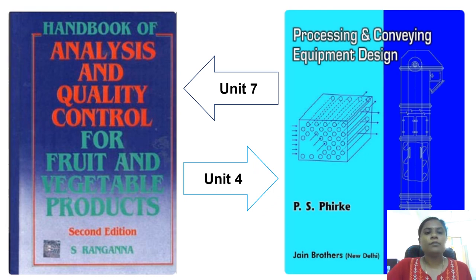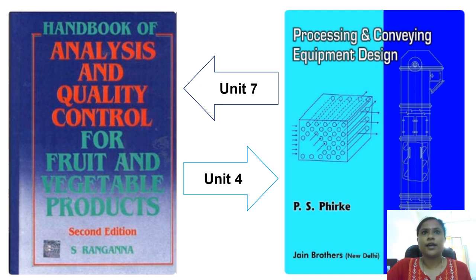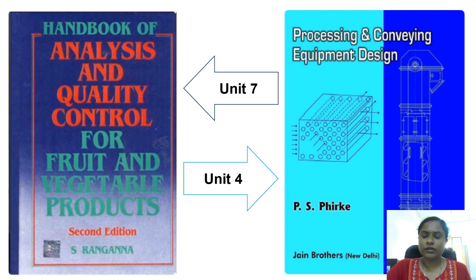To cover qualitative and quantitative analysis of protein, carbohydrate, fat, and similar topics in Unit 7, refer to 'Handbook of Analysis and Quality Control for Fruit and Vegetable Products' by Ranganna. For material handling topics, you can refer to Sahai and Singh's book as well as 'Processing and Conveying Equipment Design' by Fuerke.